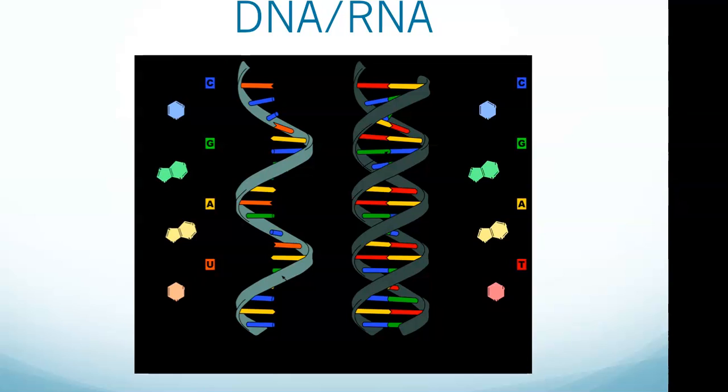Each rung of the ladder is made up of a pair of nitrogen bases. There are four bases, and again we're talking about DNA here, which are adenine, guanine, thymine, and cytosine. And they always pair with each other in specific ways. Adenine always pairs with thymine, guanine always pairs with cytosine.